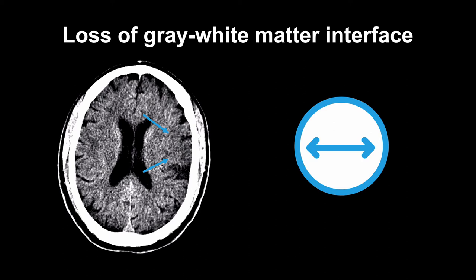In a normal patient, you should be able to follow the relatively high attenuation cortical ribbon all the way around the hemispheres on a good quality CT scan. But there's no question this is a subtle finding, and your chance of seeing it will go up if you know where to look for it based on the patient's symptoms.